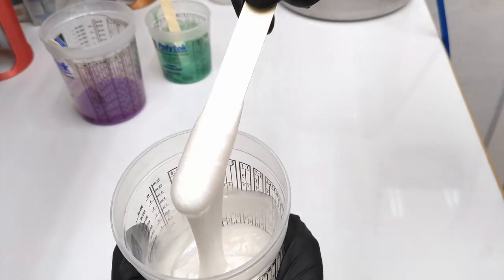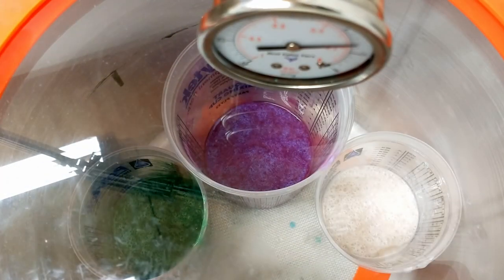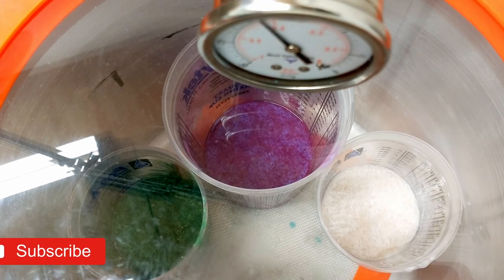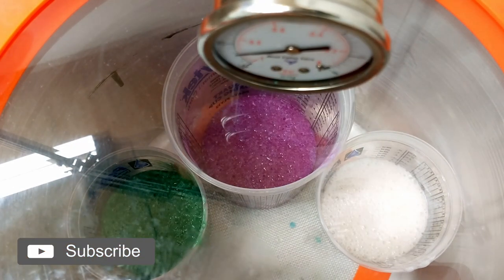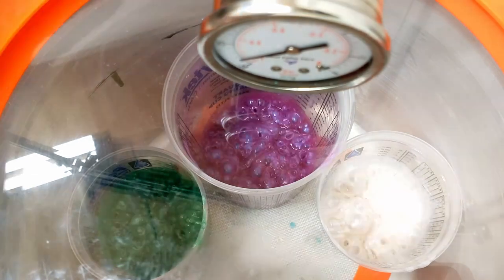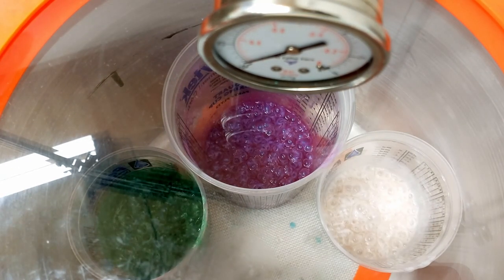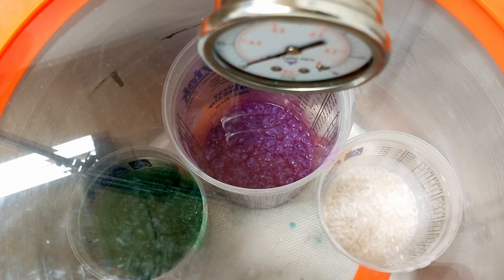Now we're going to use the vacuum chamber to pull all that air out of the silicone. Once we've seen the silicone rise, collapse, and stop bubbling, we're good to move on.